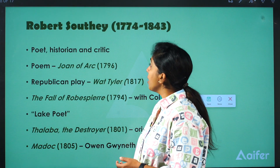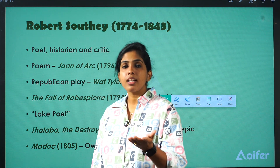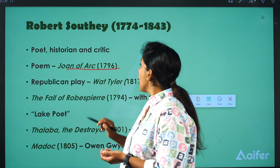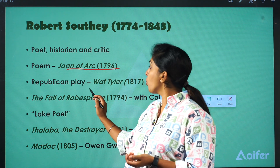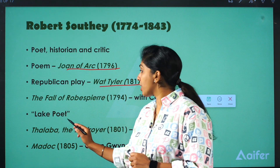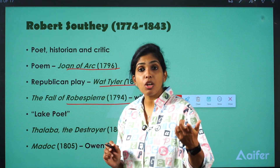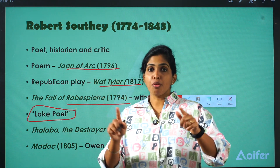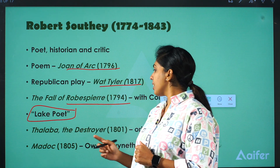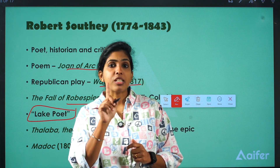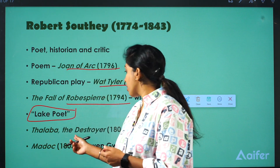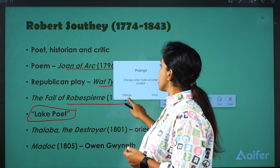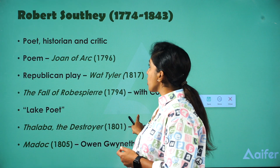Robert Southey is a poet, historian, and critic. He is very famous for his work Joan of Arc, and he also wrote a republican play named Wat Tyler in 1817. He is famous for The Fall of Robespierre, which he wrote with Coleridge. He is one among the Lake Poets. His other works include Thalaba the Destroyer, an oriental epic, and Madoc, 1805. Remember the Lake Poets connection.